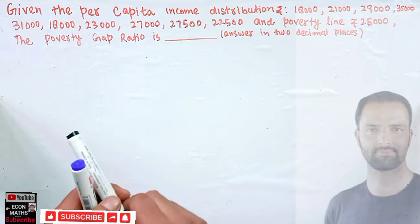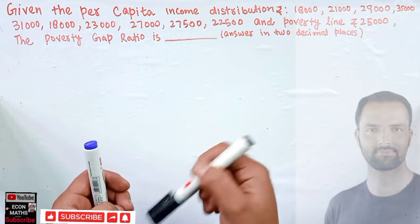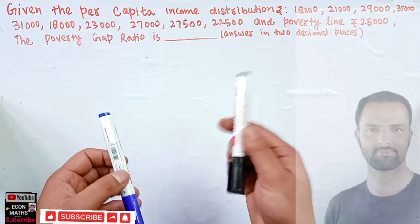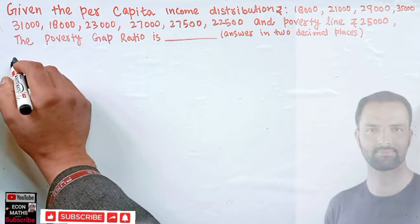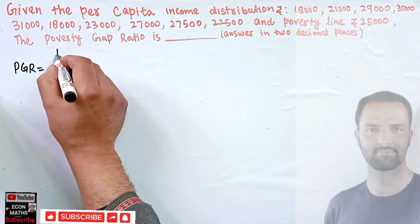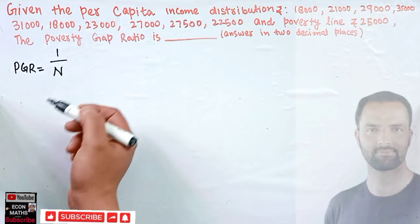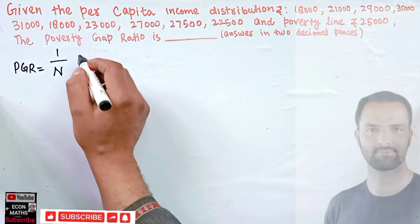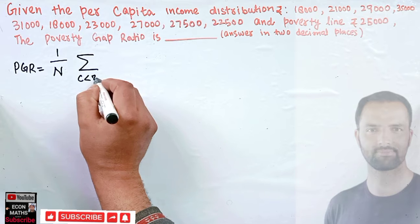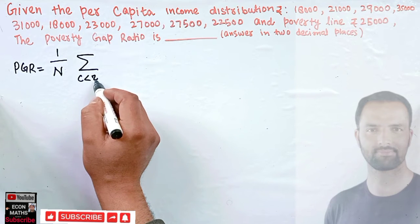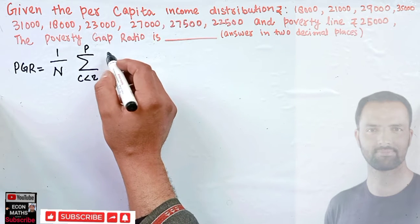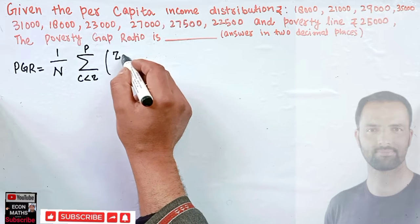The poverty gap ratio is the ratio by which the mean income of poor people falls below the poverty line. The formula for the poverty gap ratio is: one over n, multiplied by the summation for all c less than z of (z minus c) over z. Here n denotes the number of persons, z denotes the poverty line, and p denotes the number of poor.